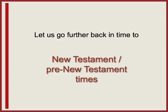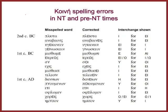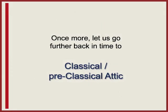Going further back in time to New Testament and pre-New Testament times: the list of errors here is no different from what we saw in Byzantine manuscripts and in Neo-Hellenic. Iota is used for epsilon-iota, epsilon-iota for iota, Y for omicron-iota, and so on, down to Y used for iota. Let us go further back to classical and pre-classical Attic.